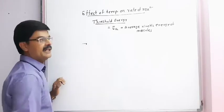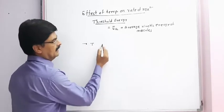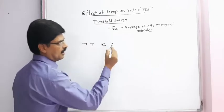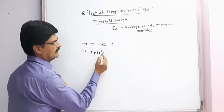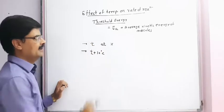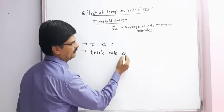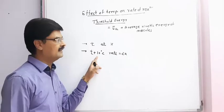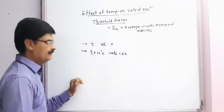If we take temperature T Kelvin at temperature T, the rate is K. Then at T plus 10 degree Celsius, the rate will be 2K. It means by rising in temperature only 10 degree Celsius, the rate of reaction becomes nearly double or even more than that.